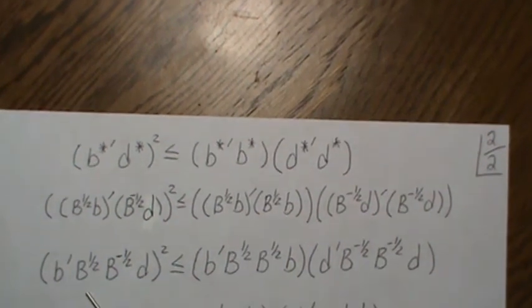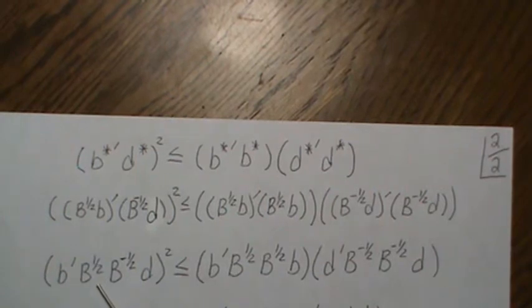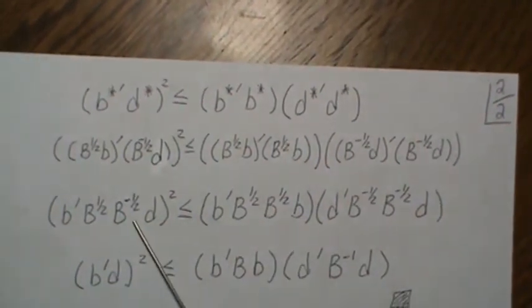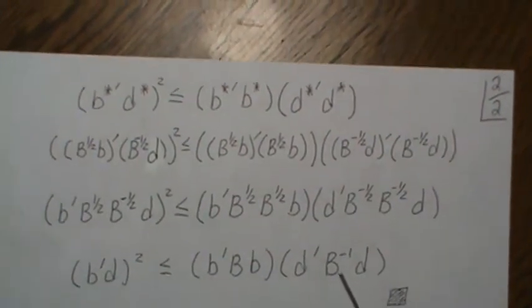Now, B to the 1 half and B to the 1 half inverse, those cancel leaving the identity matrix. This, we just get B. So here, this comes down. This is just B, and then this is B inverse, and so we're finished.